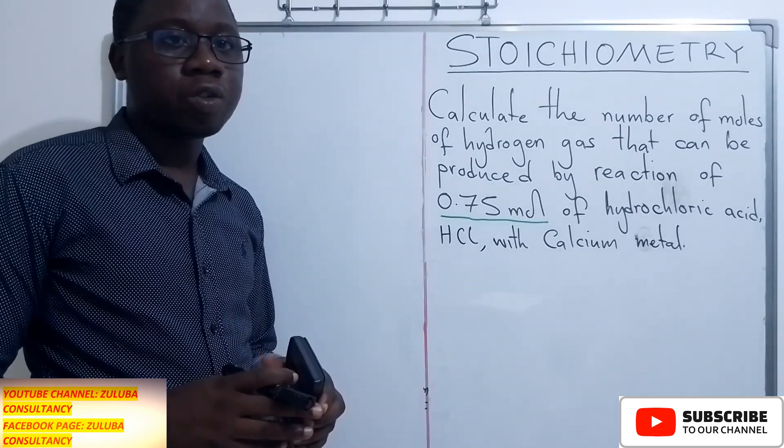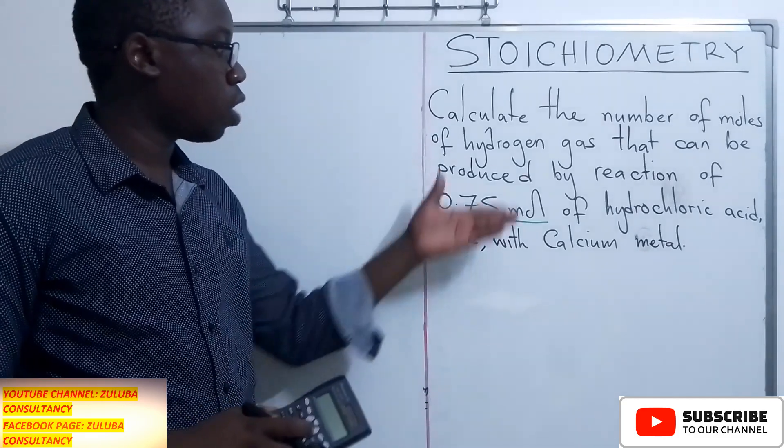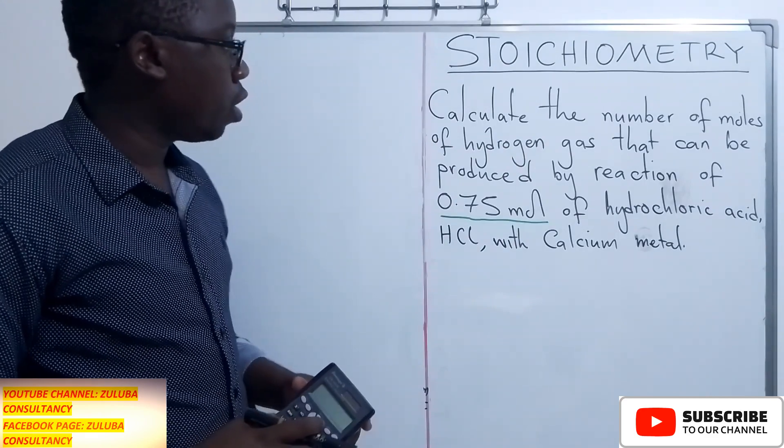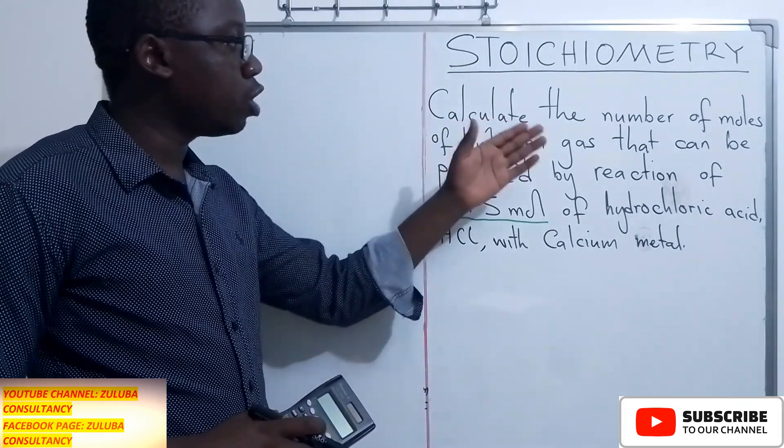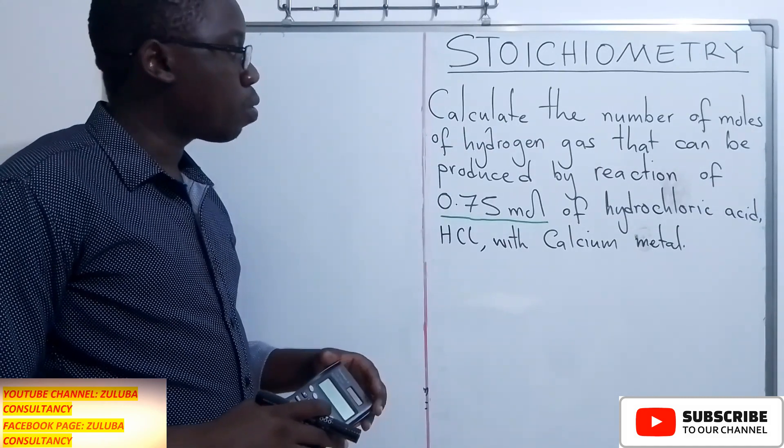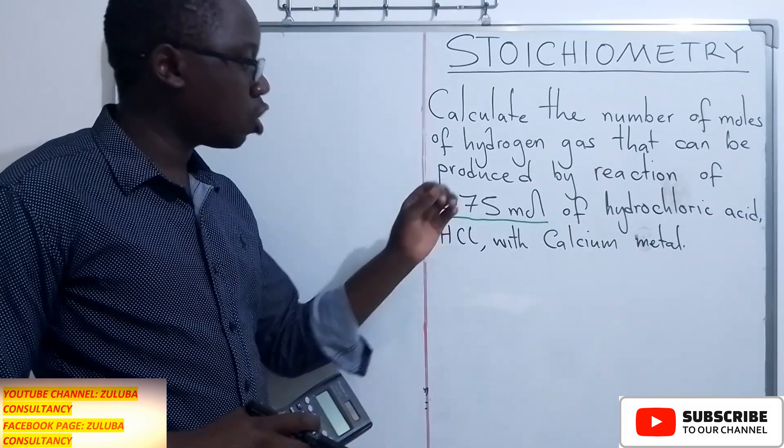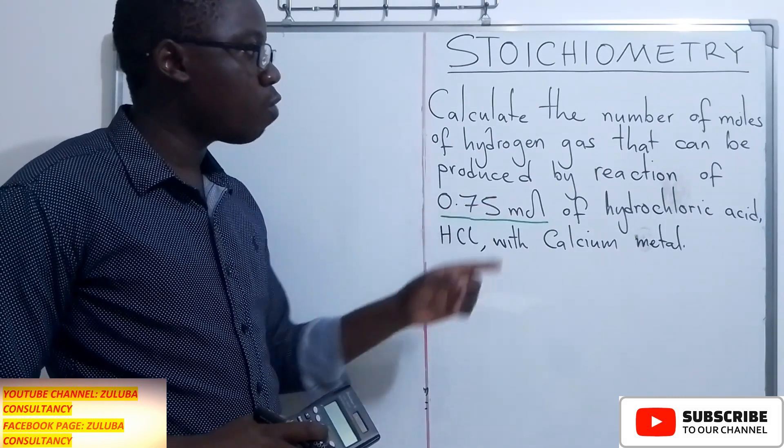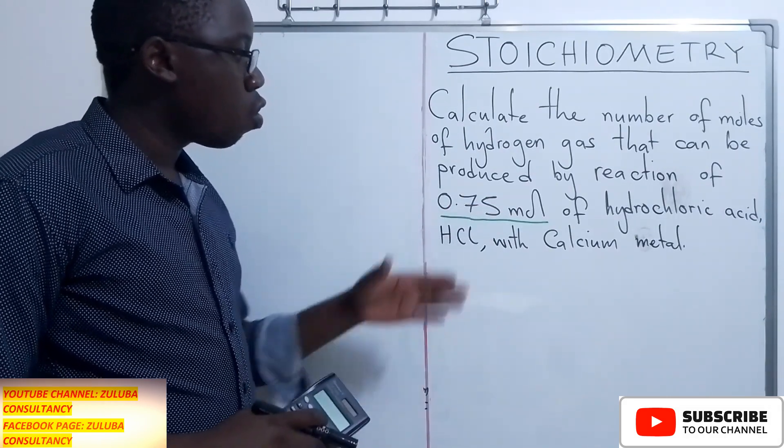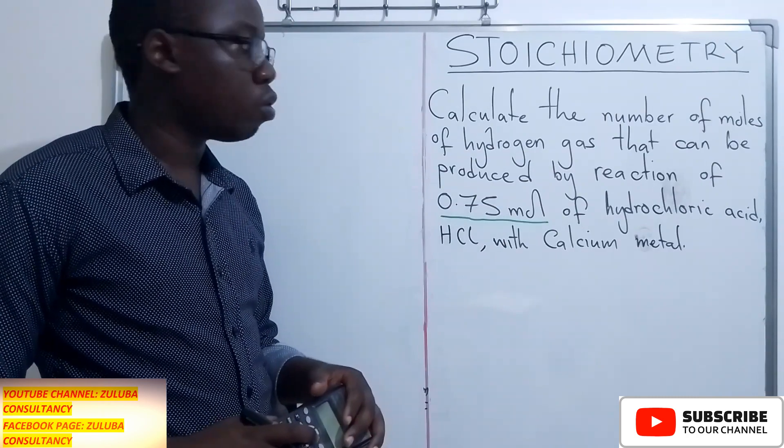Hello and welcome back to Zoloba Consultants. In this video I want to answer this question that reads: calculate the number of moles of hydrogen gas that can be produced by the reaction of 0.75 mole of hydrochloric acid with calcium metal.